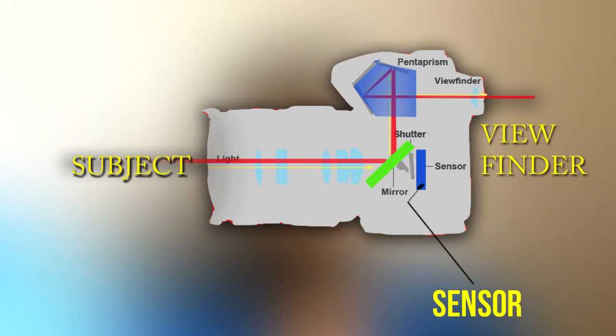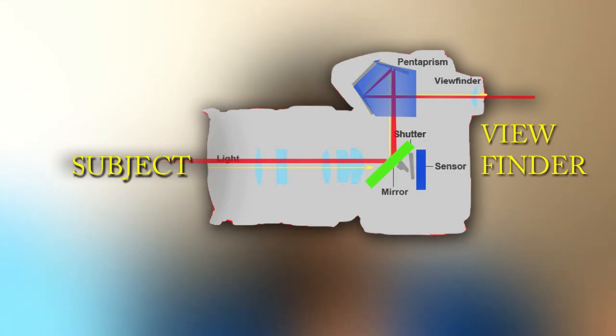We can see the photography technology in action. The image is captured and converted into digital data, then processed to produce the final photo. This is how the DSLR camera works. We can see the photo and photography result.